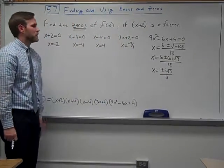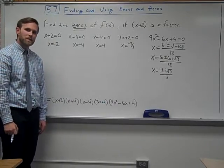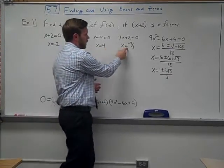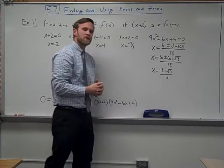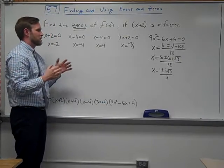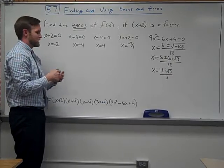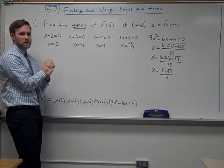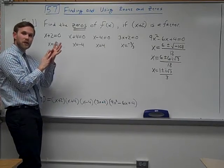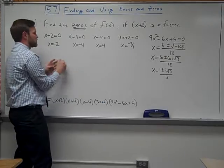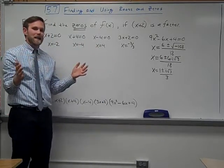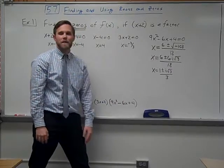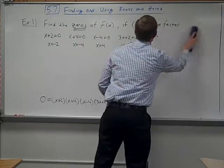We've effectively found all six zeros of the original function. It was a sixth-degree polynomial, so we need six zeros: four real solutions (−2, −4, 4, and −2/3) and two imaginary solutions from the trinomial ((1 ± i√3)/3). The 5.7 section will also ask you to describe those zeros as either real or complex — in this case, four real solutions and two imaginary solutions.